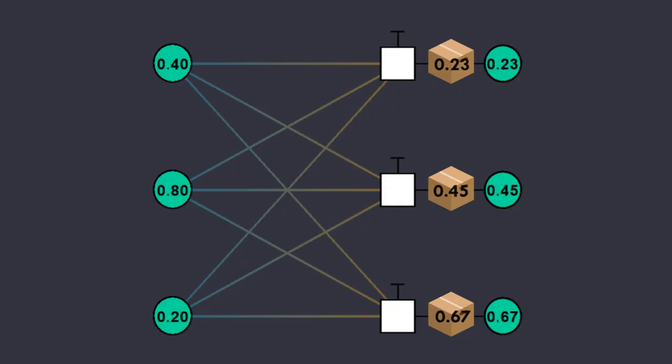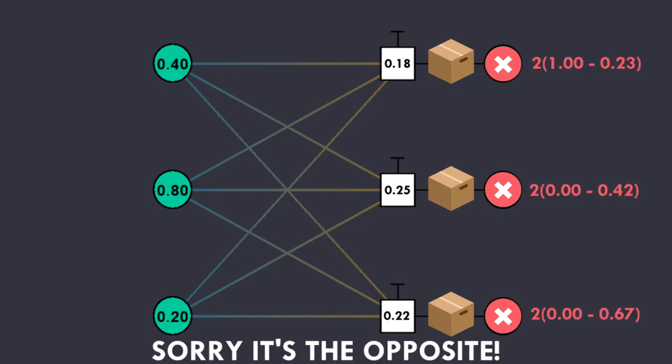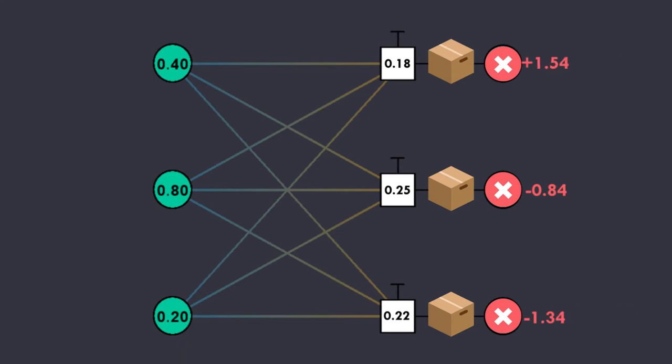Once we have backpropagated the signal, we must associate to each output an error, equal to twice the difference between what we get and what we want to obtain. The errors must be multiplied by the backpropagated signal. The results represent how much you must modify the biases to improve the network.